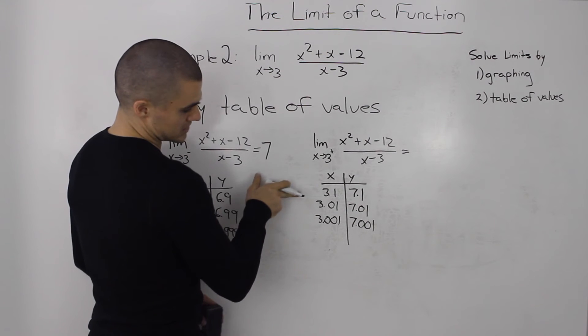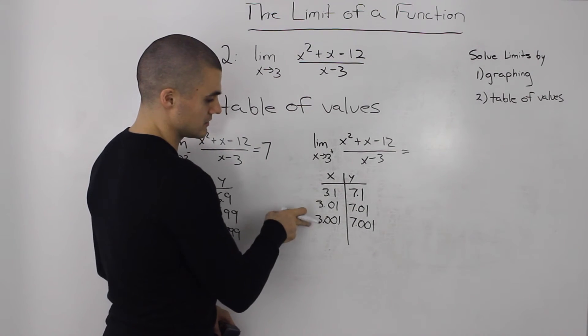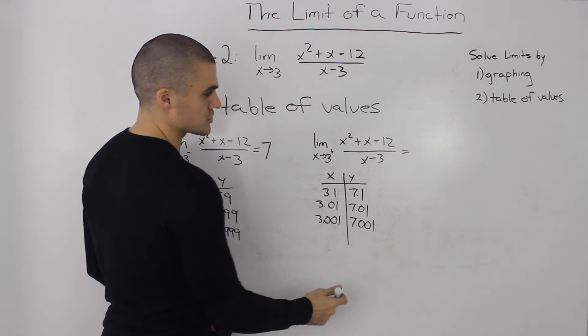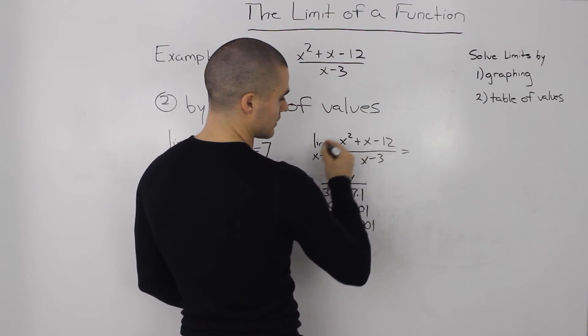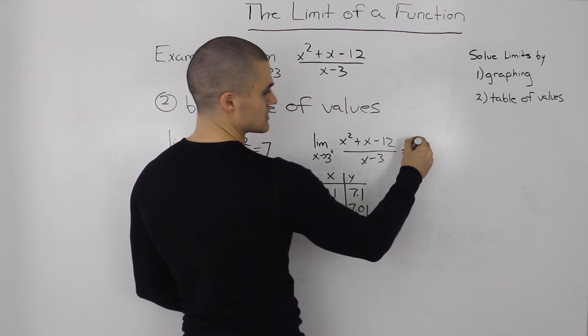Like our left-sided limit, it's safe to say as x is approaching 3 from the right side, the y value is approaching 7. So this limit as x approaches 3 from the positive side equals 7.